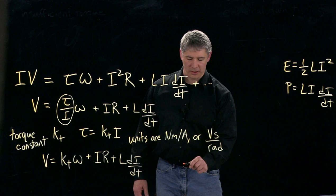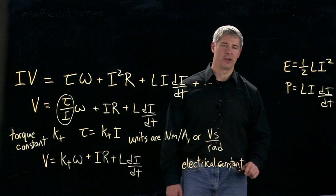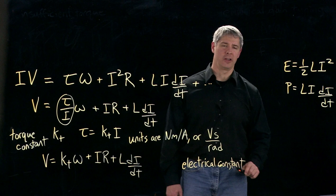But if we write it with these units, then it's often called the electrical constant. But it's the same thing, same numerical value when written in SI units. If you use different units, then of course the values might be different. But in SI units, the value is identical.